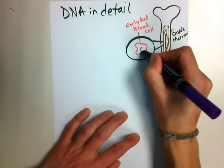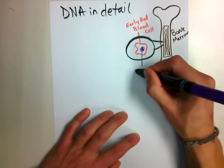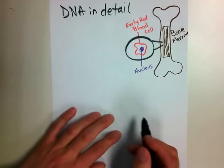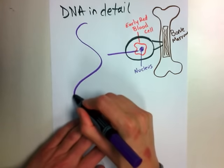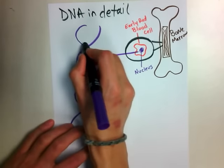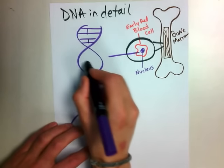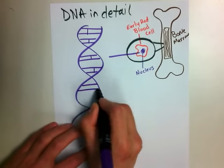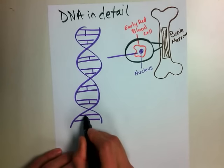Inside that early red blood cell we have our nucleus. Let's label it nucleus. Inside the nucleus we have our DNA. Now we're going to talk about DNA and what's inside that DNA and that code that we use. I'm going to draw what's inside. These are considered rungs of a ladder, and this ladder is DNA. And this is where the code is.